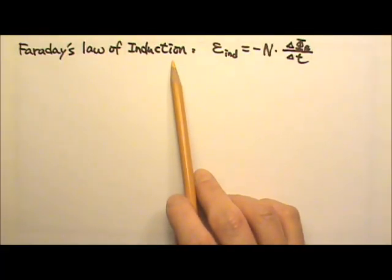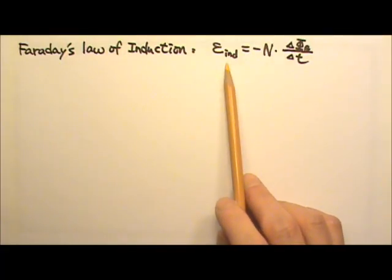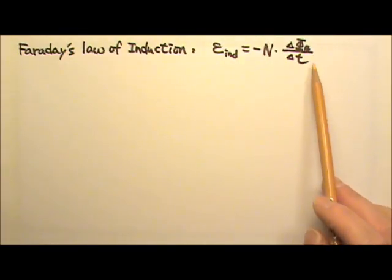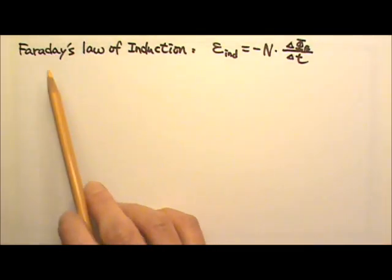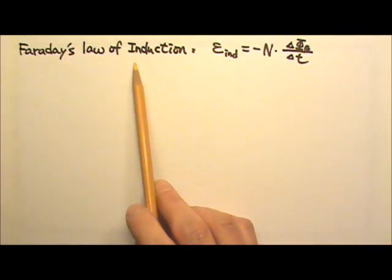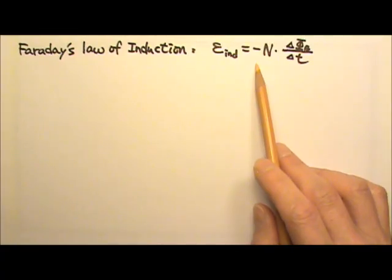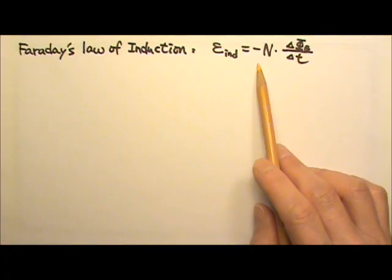Faraday's Law of Induction says the induced EMF is negative N times delta phi B over delta T. I want to mention that although this equation is known as Faraday's Law of Induction, it was not written in this form by Faraday. Faraday was not trained in mathematics, so his milestone physics and chemistry publications contain not a single equation.